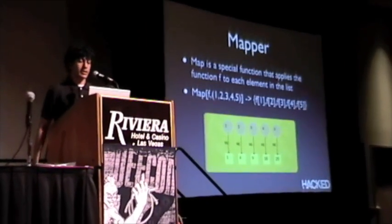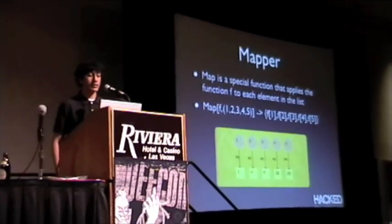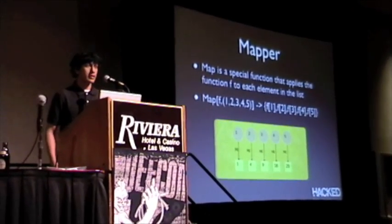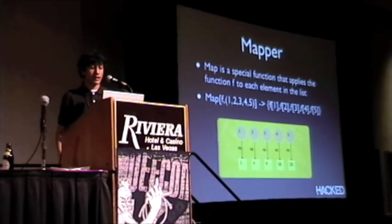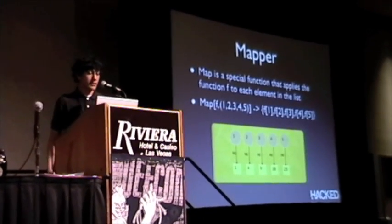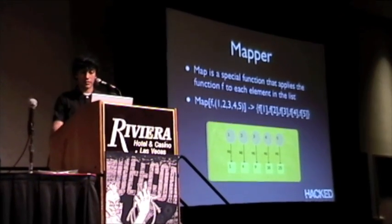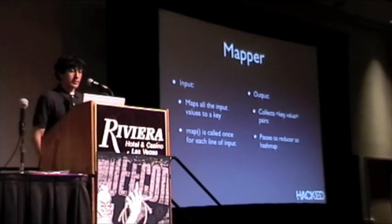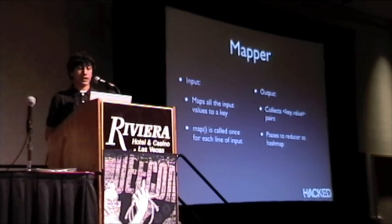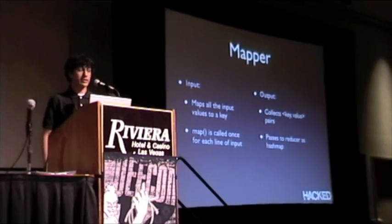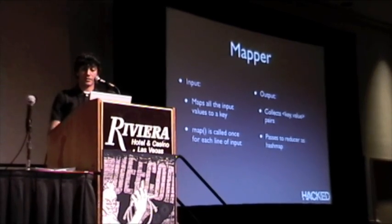A mapper is basically a special function that applies function f to each element in the data. The algebraic expression is map(f) applied to every single piece of the data — as you can see in the graphic, it just takes the function and applies it to every piece. In your mapper, you map all your input values to a key. The map function is called one time for each input line, and it outputs one key-value pair as a hash map to the reducer.